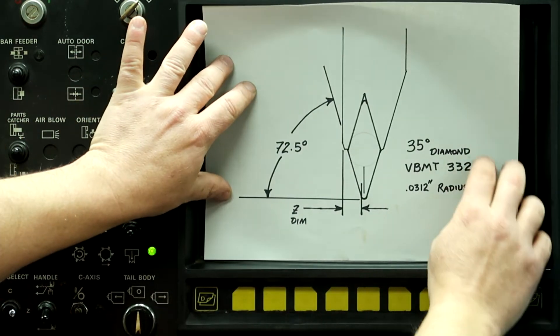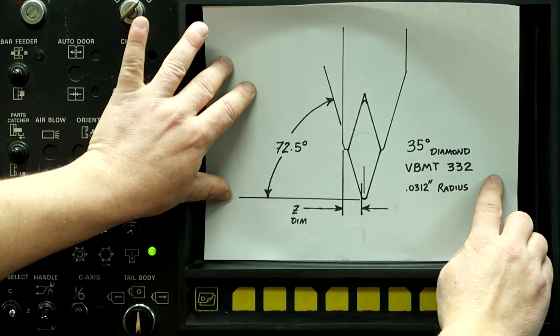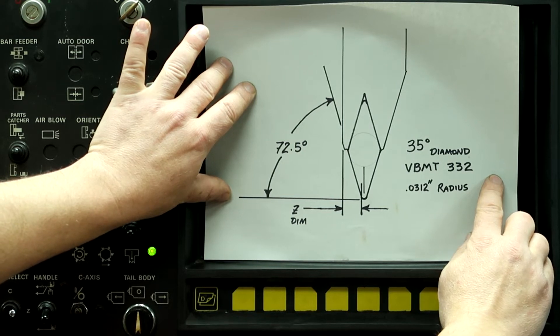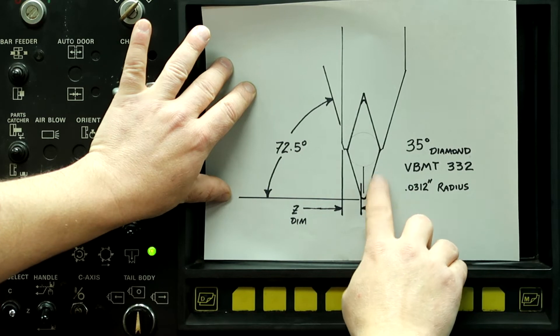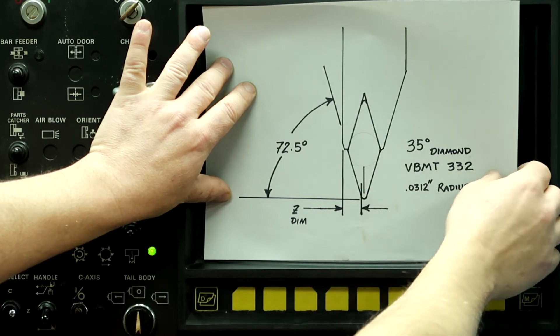So this is what the tool looks like that we just programmed and set on the previous video. This is what we're going to use to rough and finish the OD of this work piece.